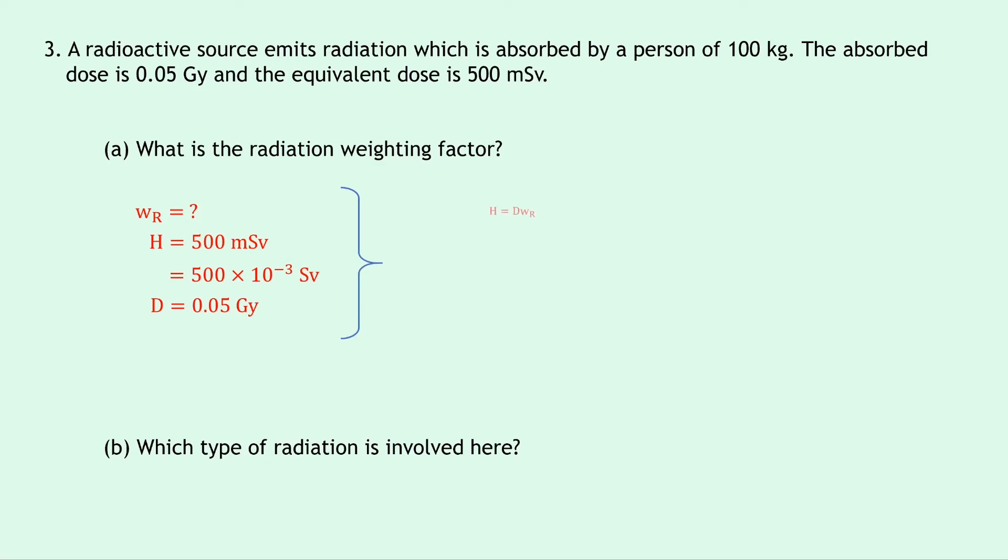So writing down our equation, we have H equals DWR. Rearranging this time for WR, we can divide both sides by D. So we get WR equals H over D. And substituting in the numbers gives us 500 times 10 to the minus 3 divided by 0.05. And if you put that into your calculator, you should get an answer of 10.